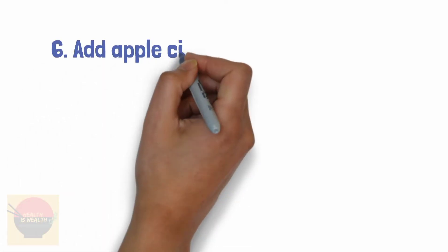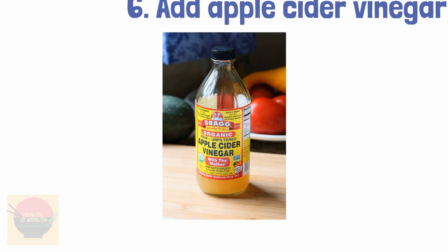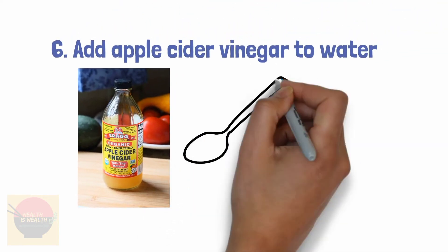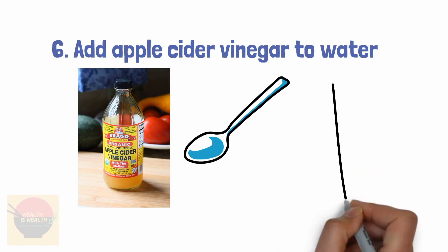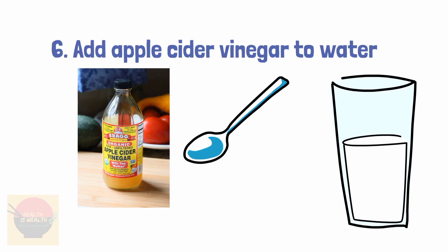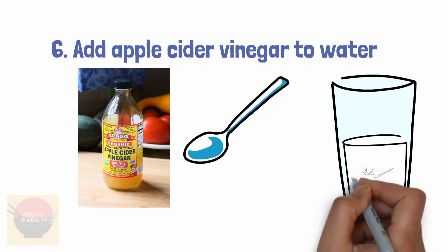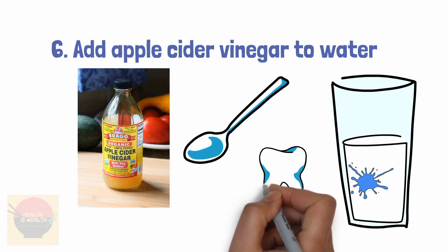6. Add apple cider vinegar to water. Apple cider vinegar aids the production of stomach acid and digestive enzymes. It may also help to alleviate gas pain quickly. Add a tablespoon of the vinegar to a glass of water and drink it before meals to prevent gas pain and bloating. It is important to then rinse the mouth with water, as vinegar can erode tooth enamel.